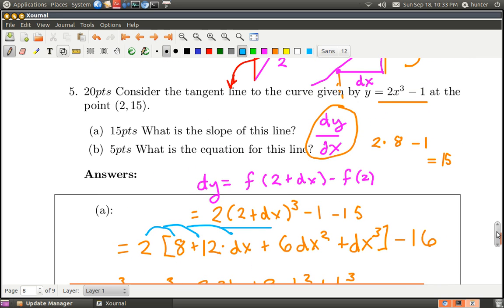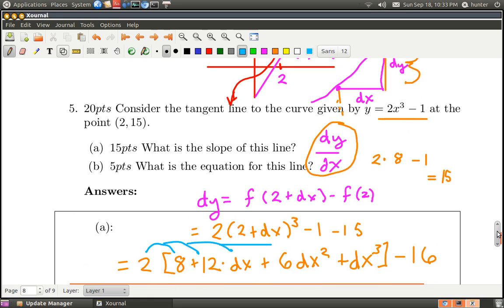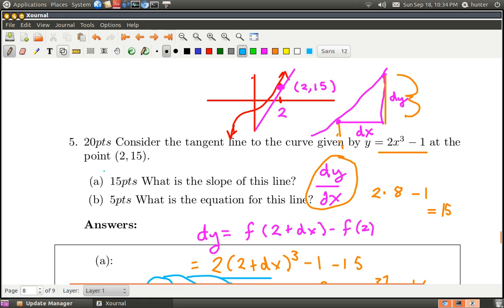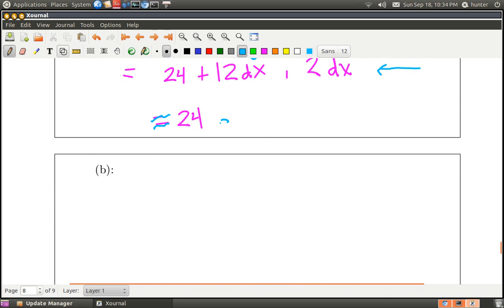So that is part a, and now what's the equation for this line? So this is really kind of dumb, so we did this in class a few times too. It's not worth very many points, because think about what we're asking here. We have 24, this is the slope, and we also have a point.